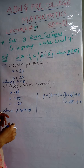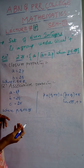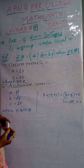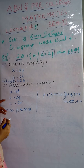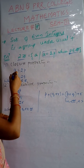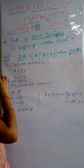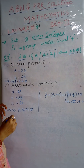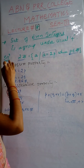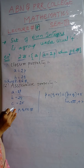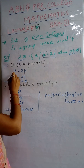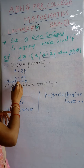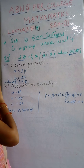To show it is a group, we have to verify all four properties. The first property is the closure property. To verify this property, we take two elements a and b. Whenever they are elements of even integers, they are in the form of two-integer multiples. So a is of the form 2p and b is of the form 2q, where p and q are integers.